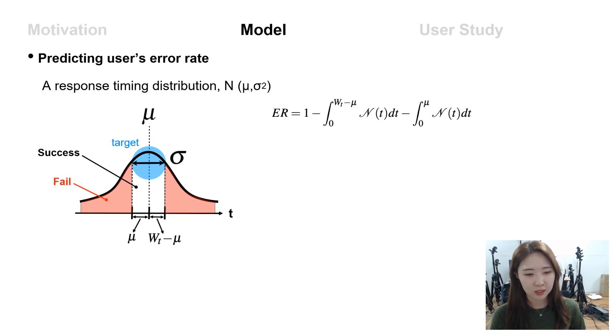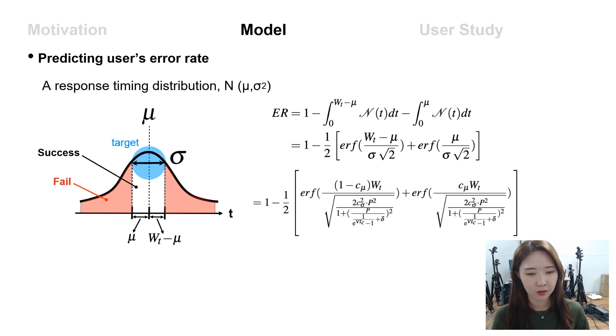If the user clicks the outside of the target, it is supposed to be an error. So by calculating the red colored area, we can calculate the error rate. And this is the final formula to calculate the error rate.